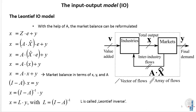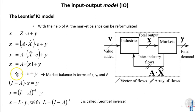With the A matrix defined, we can derive the input-output model from the market balance. The market balance states that anything produced in the output vector X is either consumed by final consumers or sent to other industries. In matrix notation: X equals Z times E plus Y, where E is a summation vector of ones, so Z times E is the row sum of the Z matrix. We can replace Z using the definition of the A matrix and rearrange, giving the market balance as X equals A times X plus Y, where A times X is the intermediate consumption.